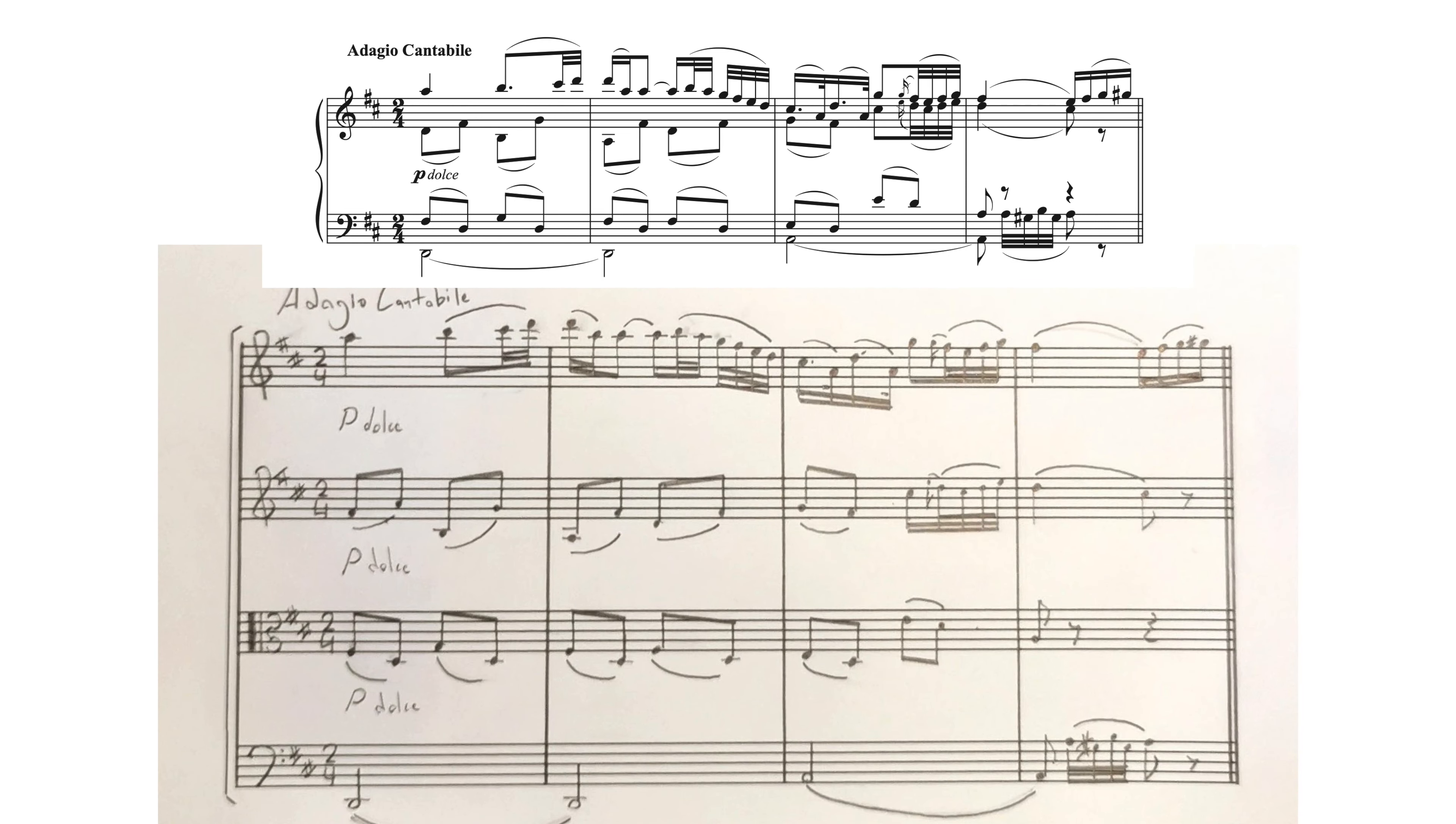And after that we can go in and add the tempo marking, the expression markings, and the dynamic markings. So on the original string quartet score there is only one dynamic marking. It was piano right in the middle of the grand stave.